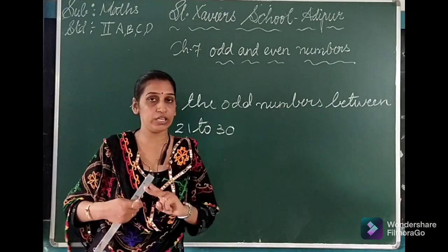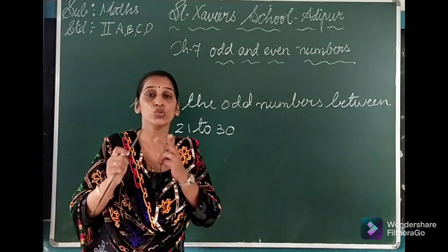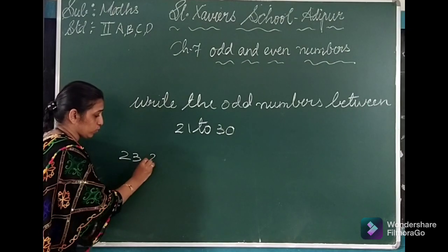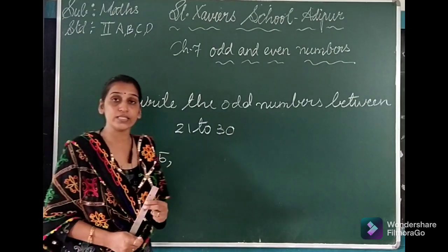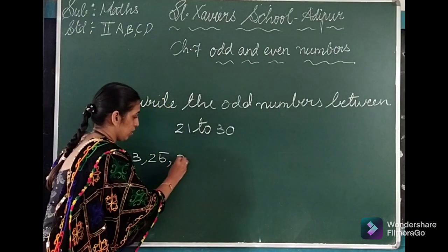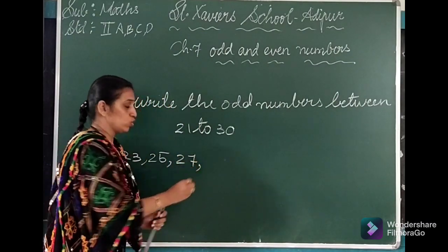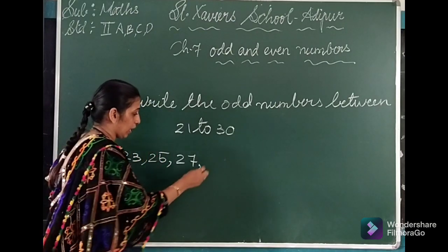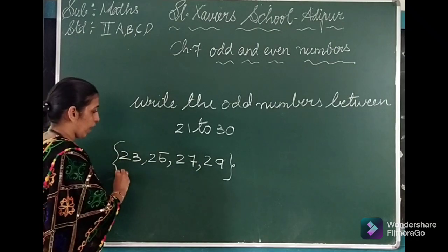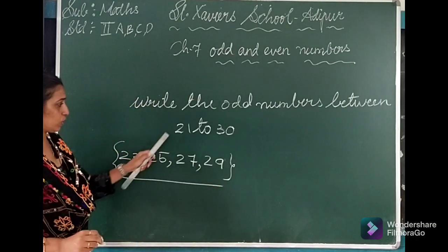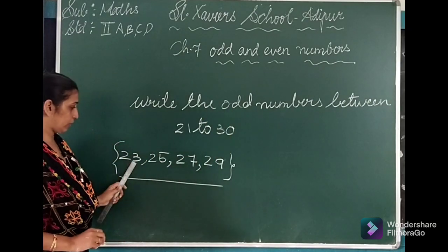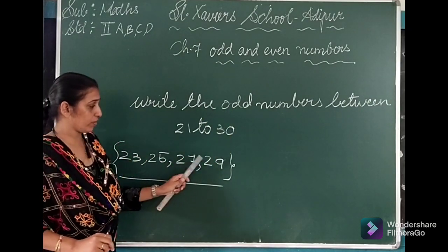What about 24? It's even, so we skip it. 25 — five is odd, so we write 25. 26 is even. 27 is odd. 28 is even. 29 is odd. So the odd numbers we have to write between 21 to 30 are: 23, 25, 27, 29.